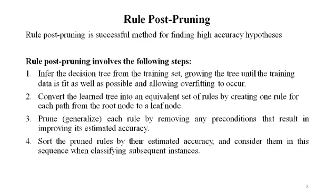The second step is to convert the learned tree into an equivalent set of rules by creating one rule from each path from the root node to the leaf node. The third step is to prune — that is, generalize — each rule by removing any preconditions that result in improving its estimated accuracy. The last step is to sort the pruned rules by their estimated accuracy and consider them in this sequence when classifying subsequent instances.